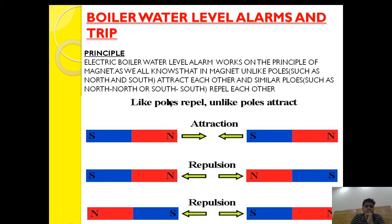The electric boiler water level alarm works on the principle of magnets. A very simple property of a magnet is that unlike poles — north and south — attract each other, and same poles — north-north or south-south — repel each other. On this principle, the boiler water level alarms and trips work.